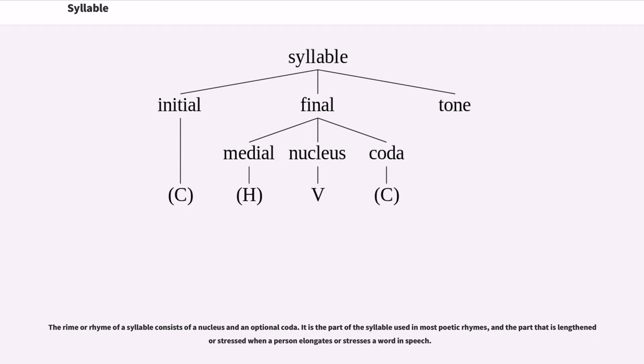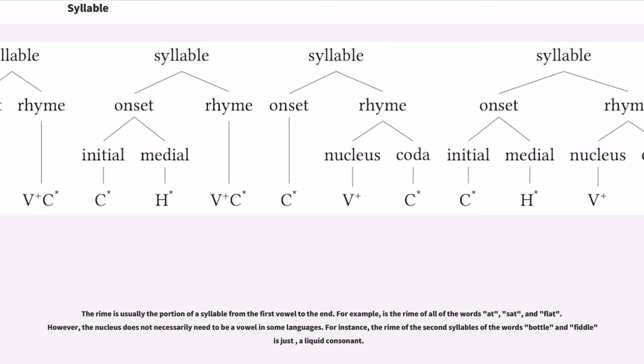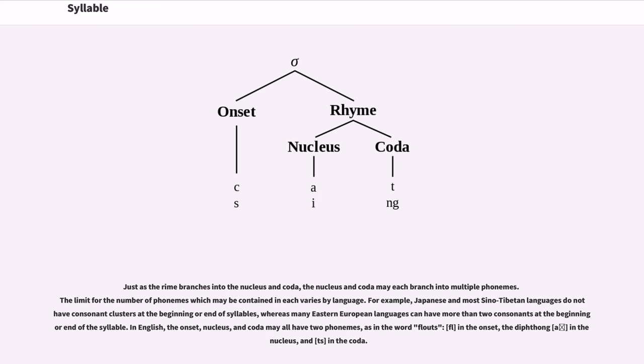The rhyme of a syllable consists of a nucleus and an optional coda. It is the part of the syllable used in most poetic rhymes, and the part that is lengthened or stressed when a person elongates or stresses a word in speech. The rhyme is usually the portion of a syllable from the first vowel to the end. For example, at is the rhyme of all of the words cat, sat, and flat. However, the nucleus does not necessarily need to be a vowel in some languages. For instance, the rhyme of the second syllables of the words bottle and fiddle is just a liquid consonant.